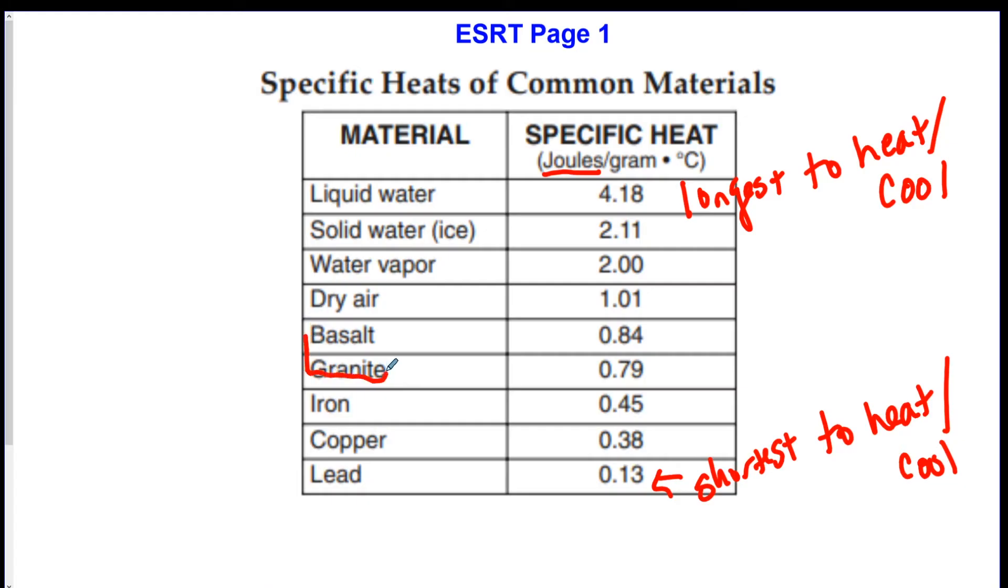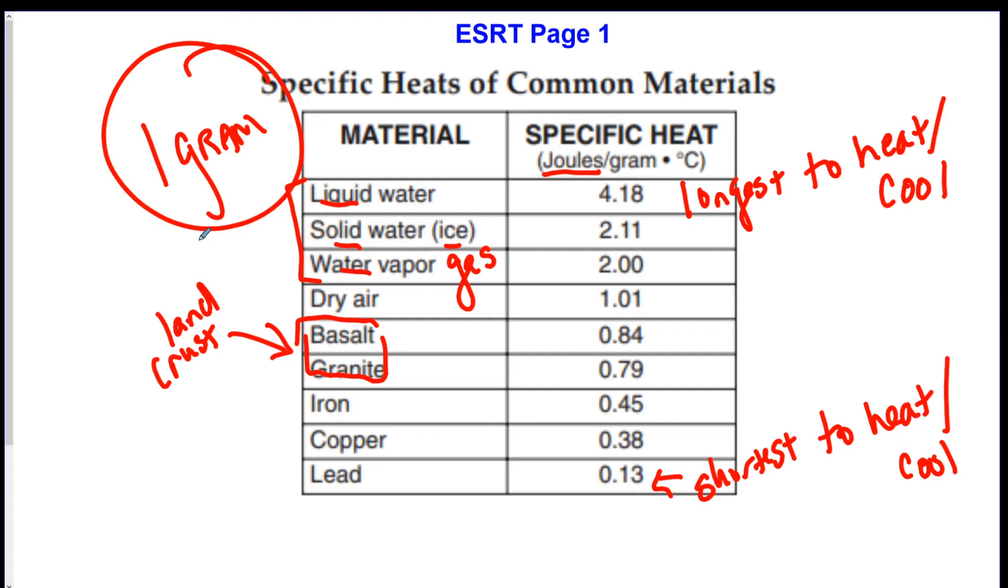Something to keep in mind is that basalt and granite right here make up our land, most of the crust of the earth. And the top three here are all the three different forms of water. So we've got liquid water, solid water, which is ice, and water vapor, which is the gas form of water. There's a couple things to just keep in mind. Everything on this chart is for one gram only. So if they ever ask you something like, what is it for 10 grams, you would have to multiply this number by however many grams, which we'll get to in a minute. So this is how many joules per one gram would raise the temperature by one degree Celsius.